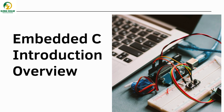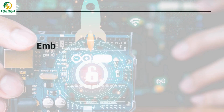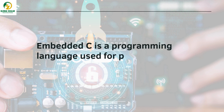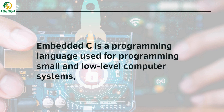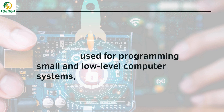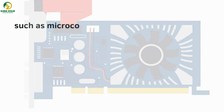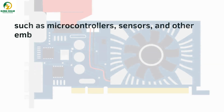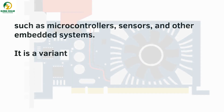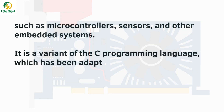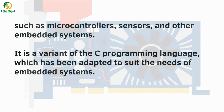Embedded-C is a programming language used for programming small and low-level computer systems, such as microcontrollers, sensors, and other embedded systems. It is a variant of the C programming language which has been adapted to suit the needs of embedded systems.